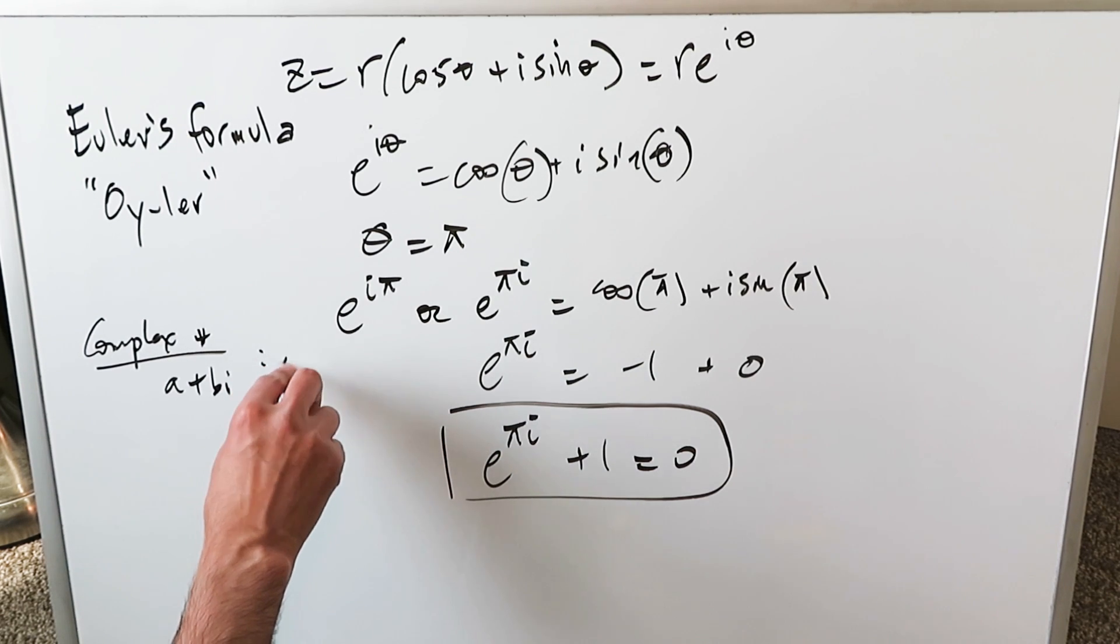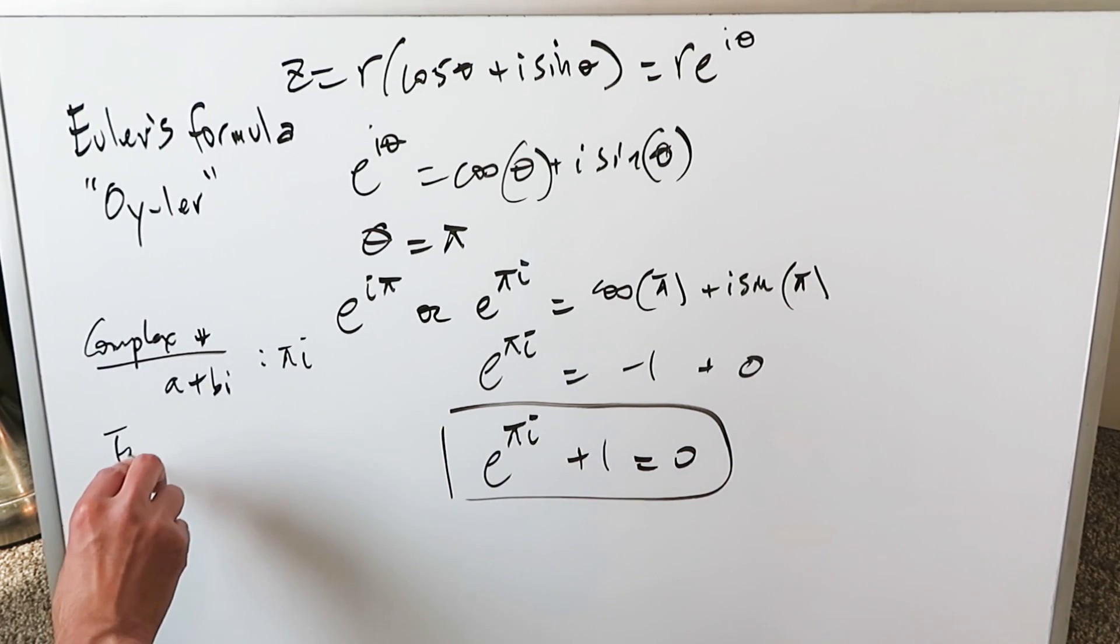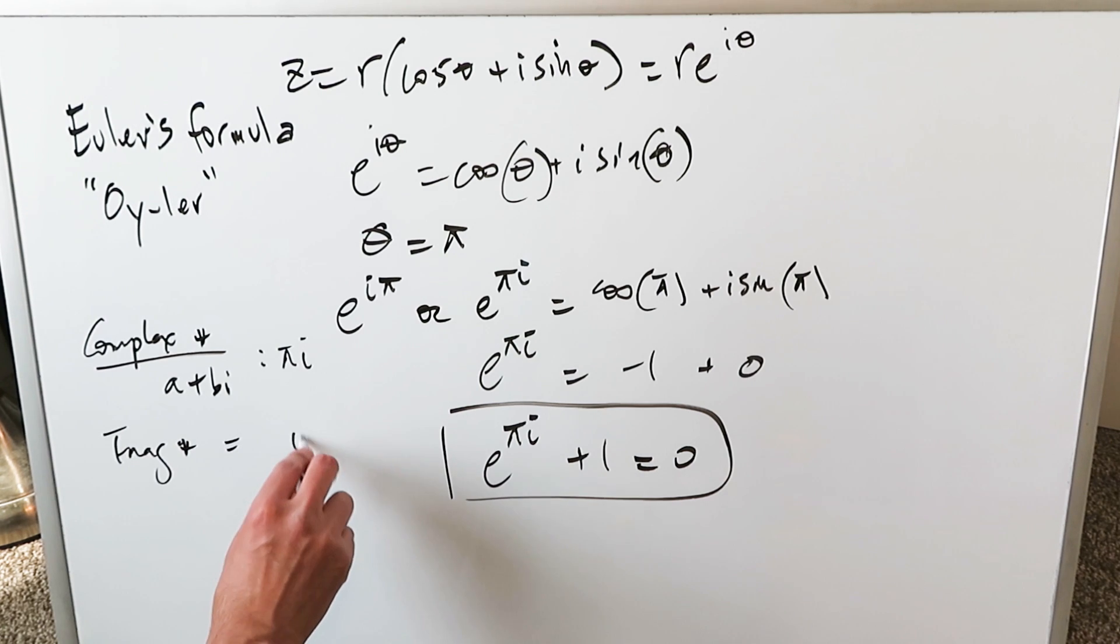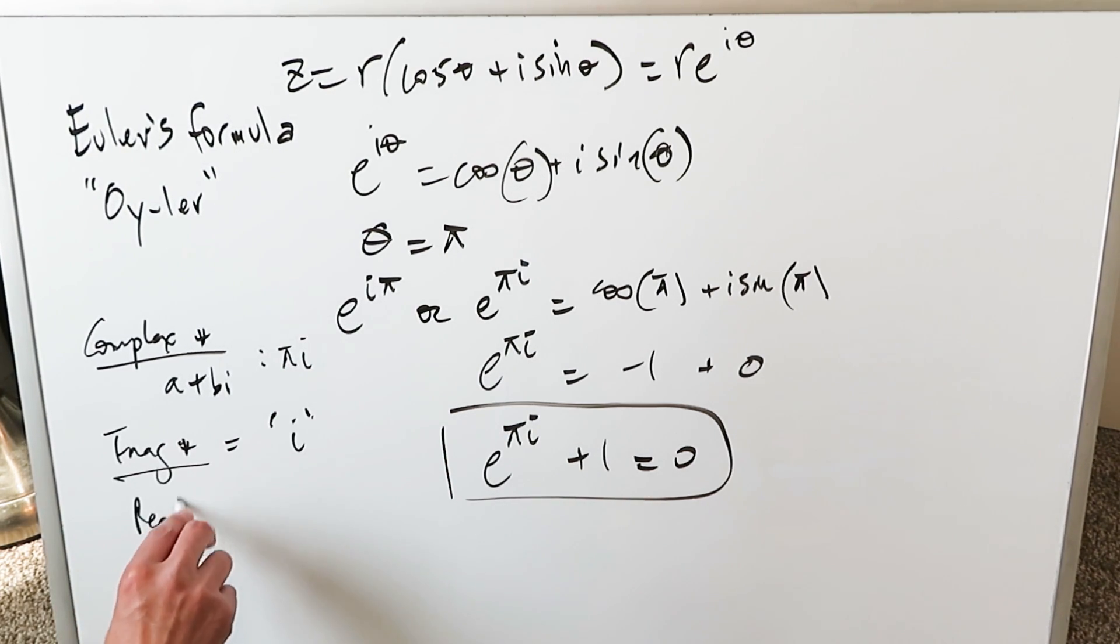You have a complex number here which is your pi i. You also have your imaginary number here and that imaginary number is just your i. As you can see, you got your real numbers over here. Anything which is not complex or imaginary is your real number.